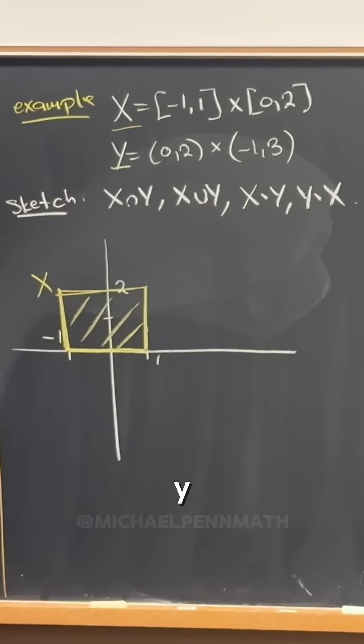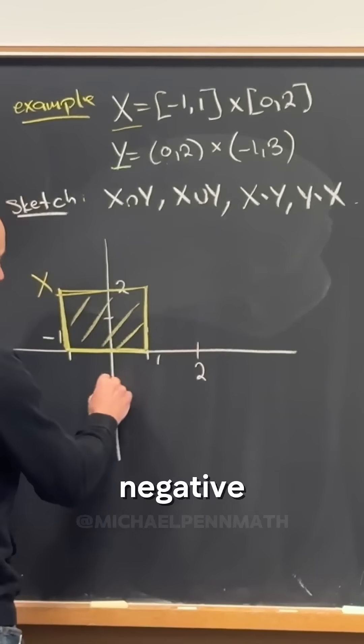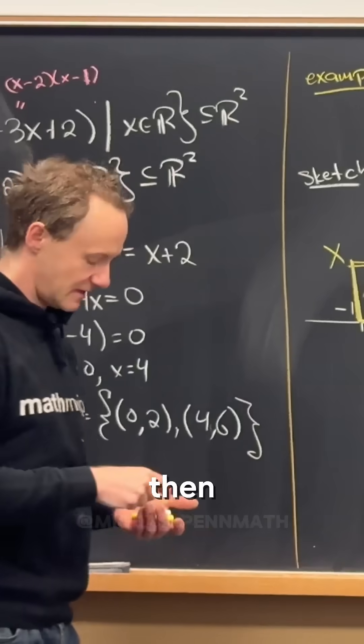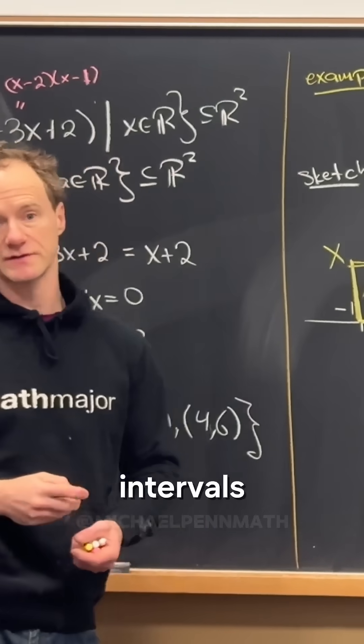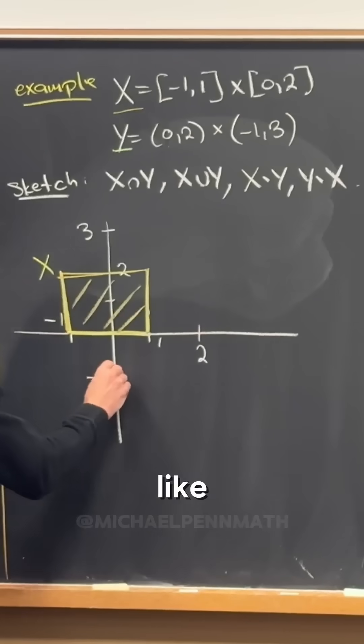And then let's look at Y. So that's going to be zero, two. So let's go ahead and put a two here, and then negative one up to three. And then those are both open intervals, so let's put that as dotted lines. So that would be something like this.